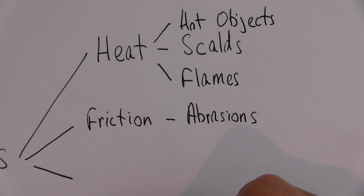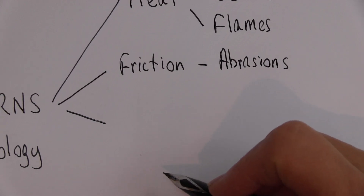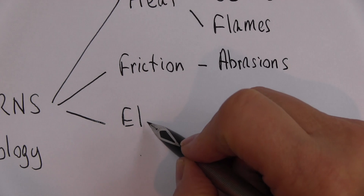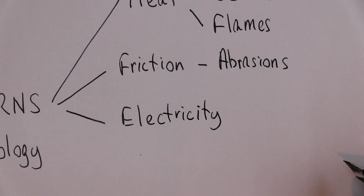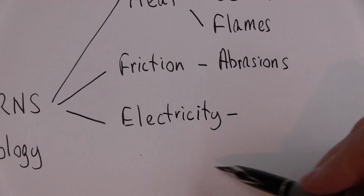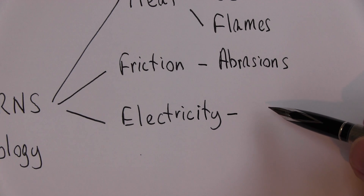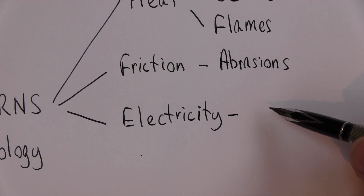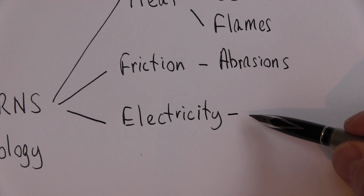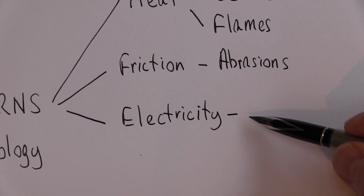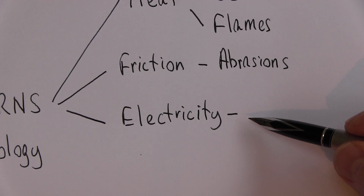Another cause you'll probably have heard of is electricity. In old-fashioned light bulbs the current went through the coil and the coil would glow white hot. In an electric fire, the current goes through a resistor and generates heat. It's the same with the tissues of the body.